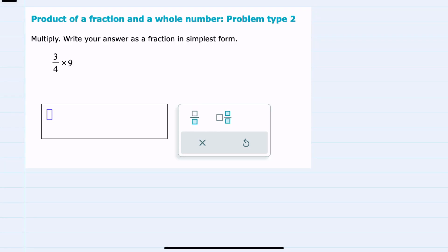In this video I'll be helping you with the Alex problem type called product of a fraction and a whole number, problem type 2. Our instructions here are to multiply and to write our answer in simplest form, and this example has 3/4 times 9.